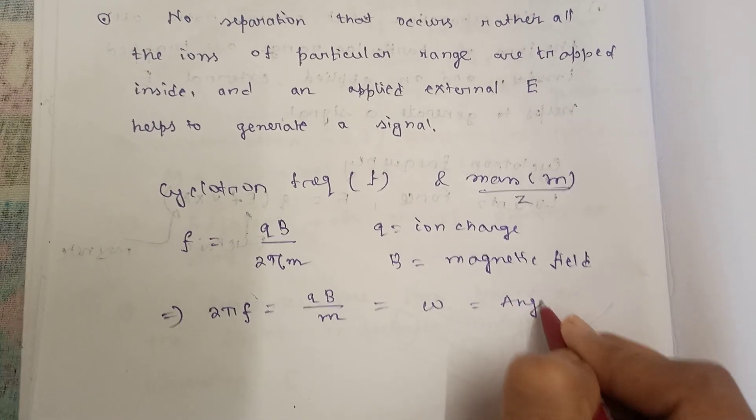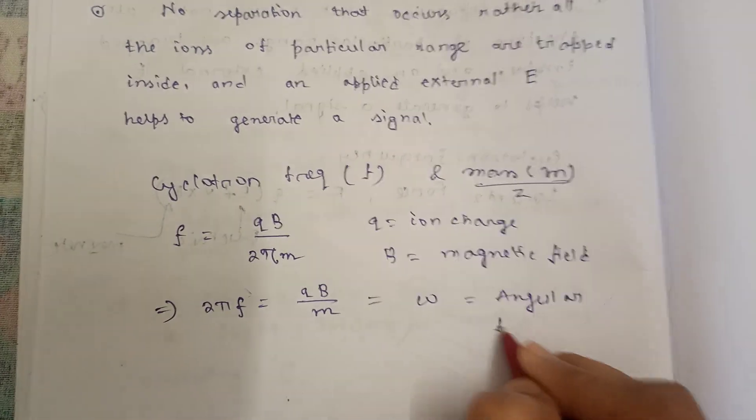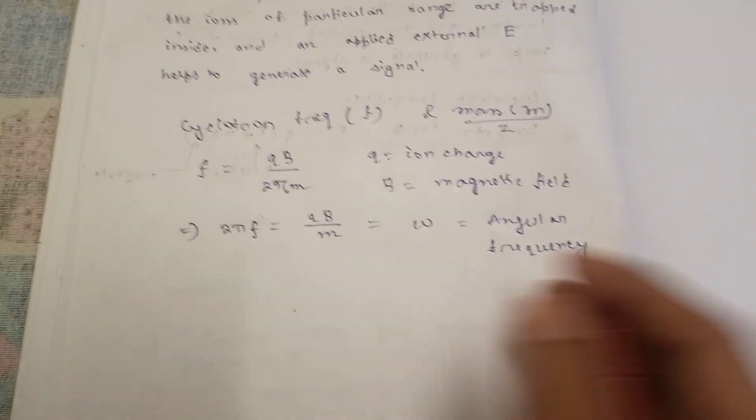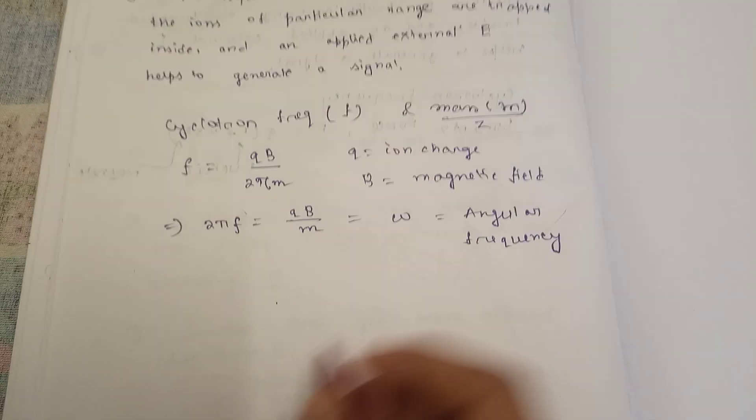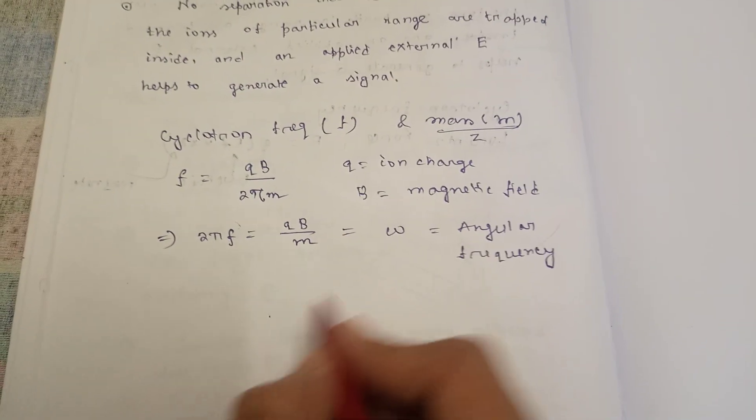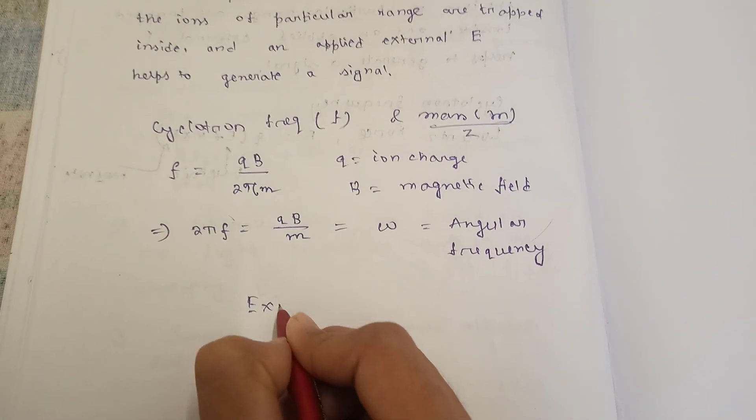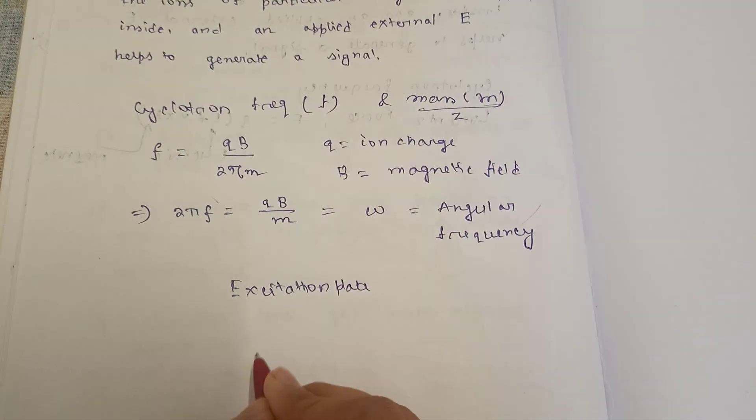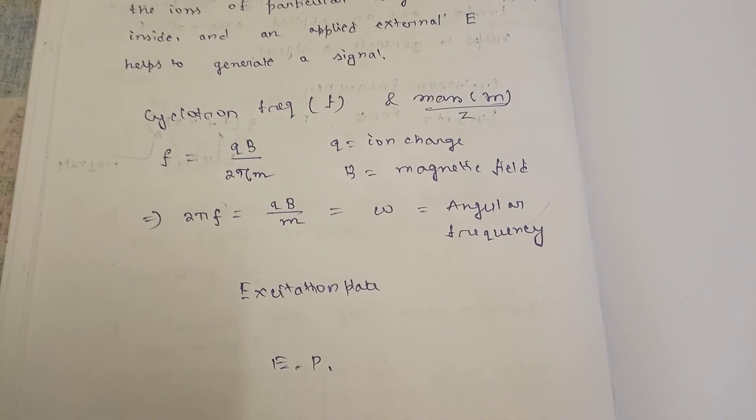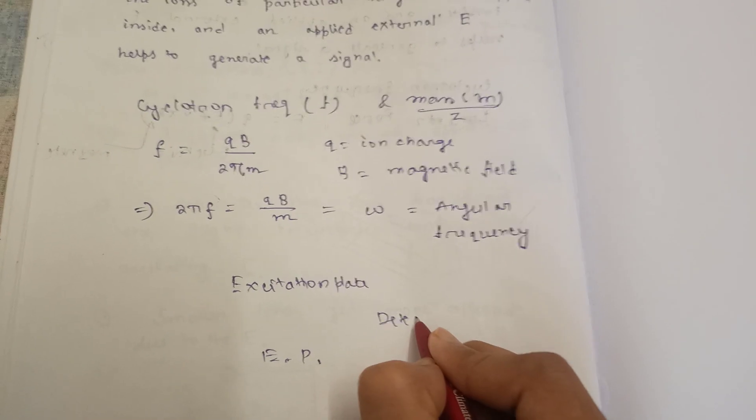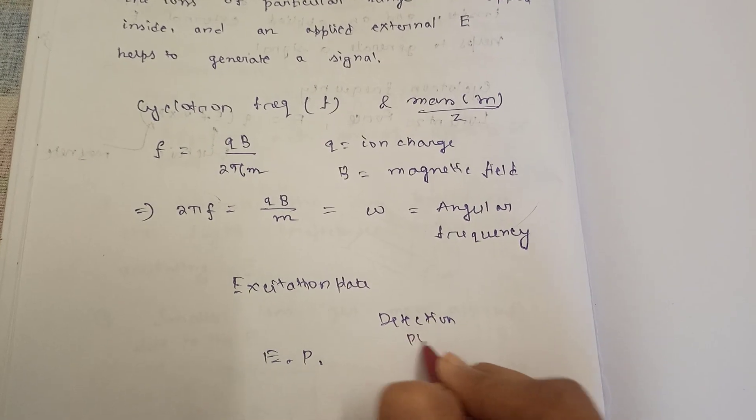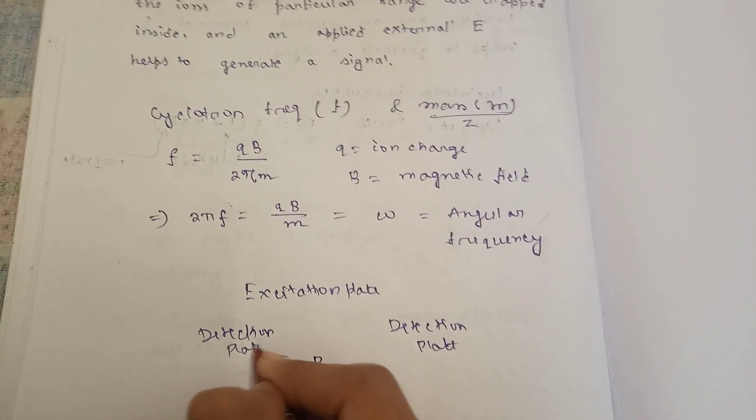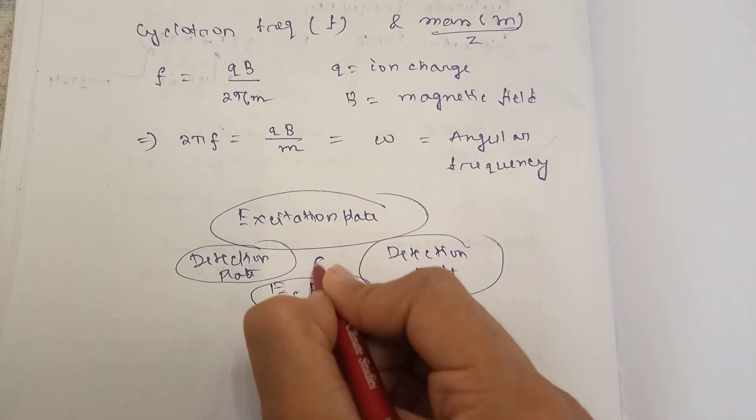So why is it needed? As I said, the ions will be trapped by a magnetic field. Let's say there is the excitation plate, and there is also the detection plate.